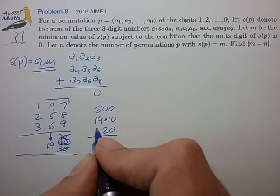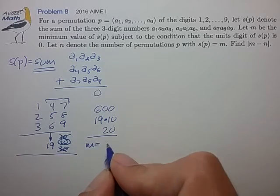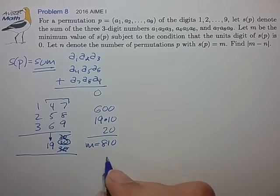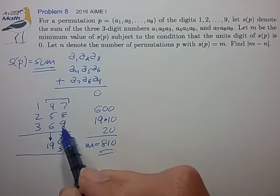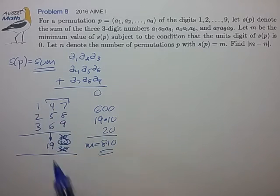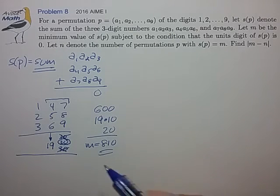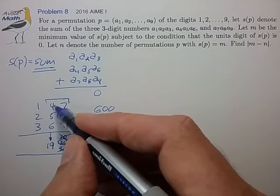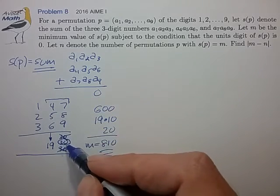And the units digits, as we found out, have to add up to 20. And if we add these up, we find that the M value we're looking for is 810. So that's a big help. So now let's see, how can we arrange these digits to form the various permutations that are called for?